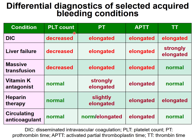In DIC: decreased platelet count, prolonged PT and APTT, and prolonged thrombin time. In liver failure: decreased platelet count (due to portal hypertension and splenomegaly), prolonged PT and APTT due to impaired factor synthesis, and prolonged thrombin time due to decreased fibrinogen. In massive transfusion: decreased platelet count, prolonged PT and APTT, but usually normal thrombin time.